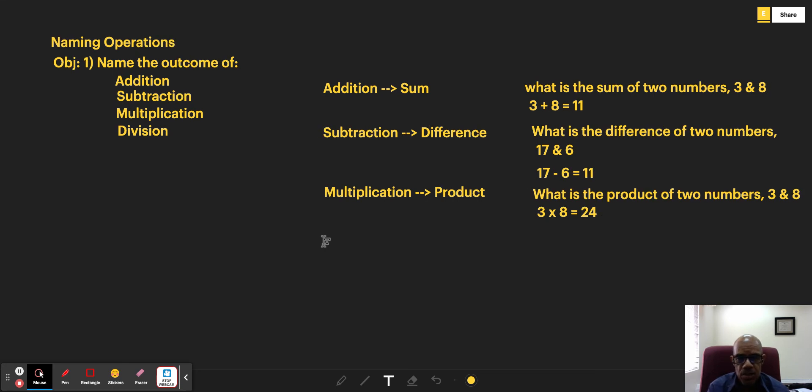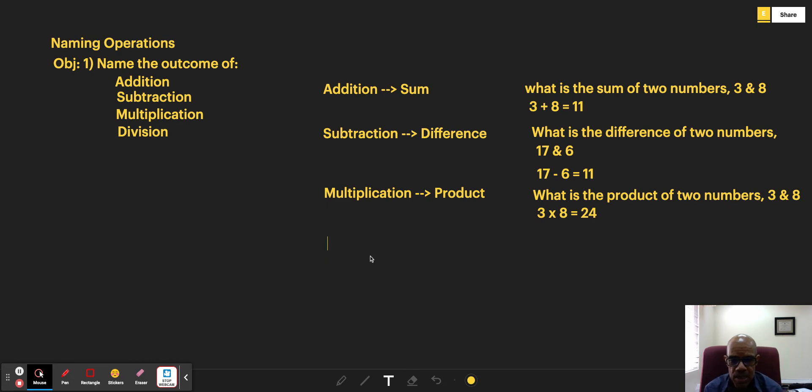Finally, the last operation we want to look at is division. The outcome of division we call the quotient. If we ask something like, what is the quotient of 15 and 5?